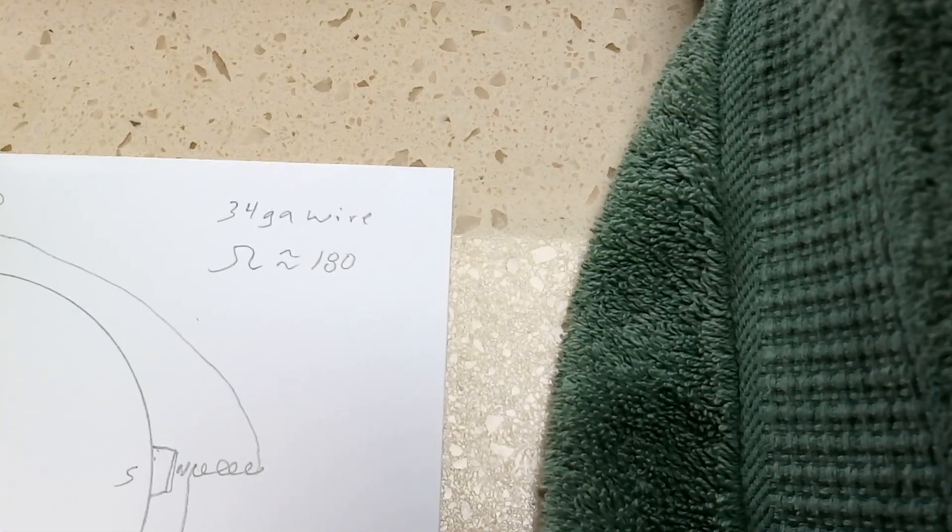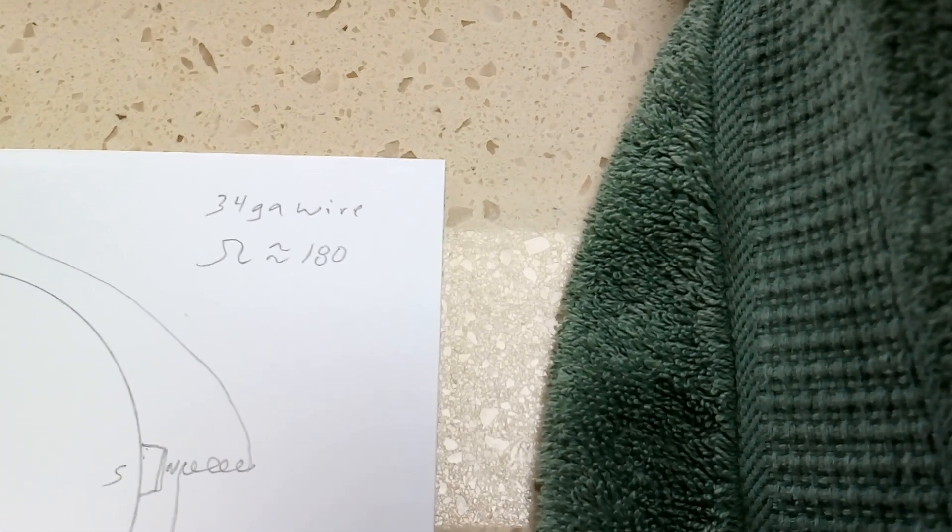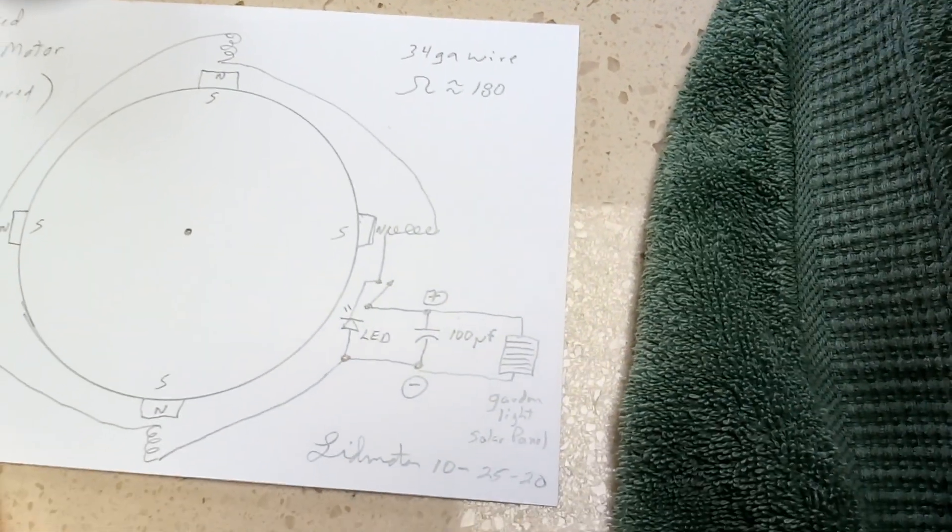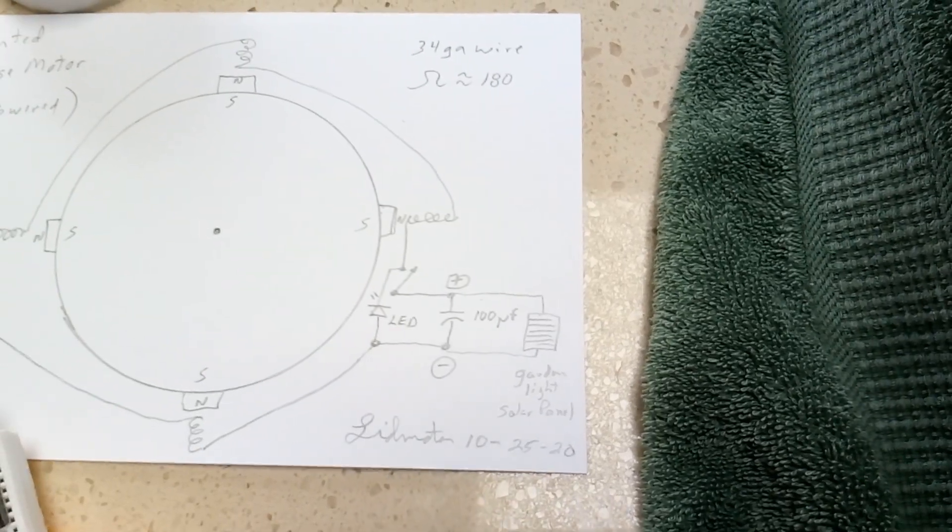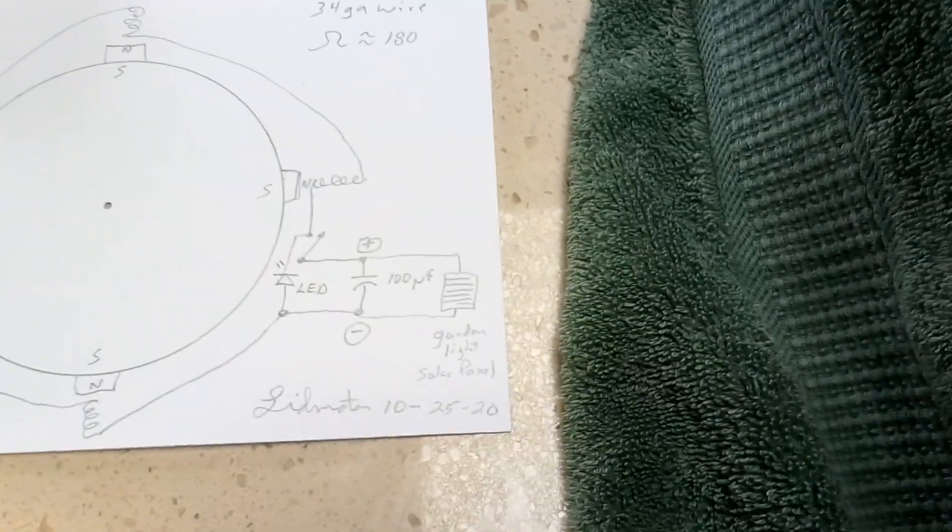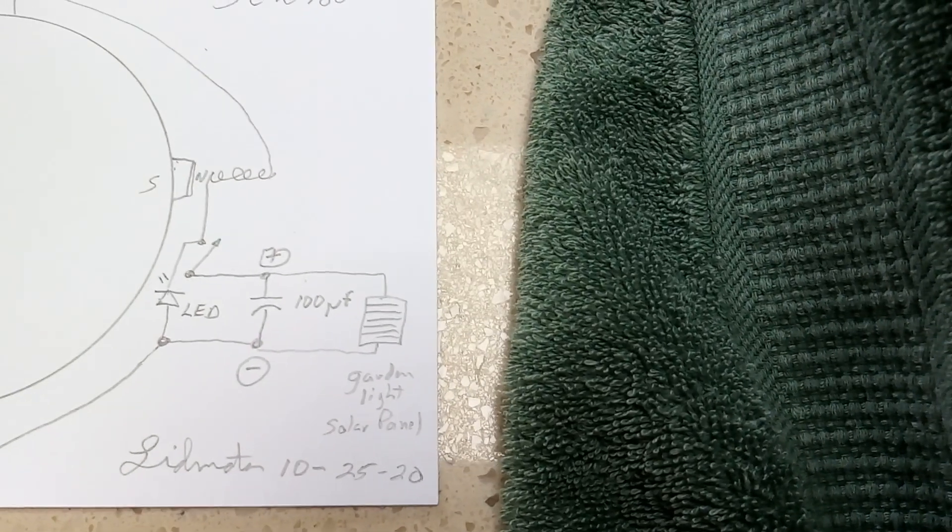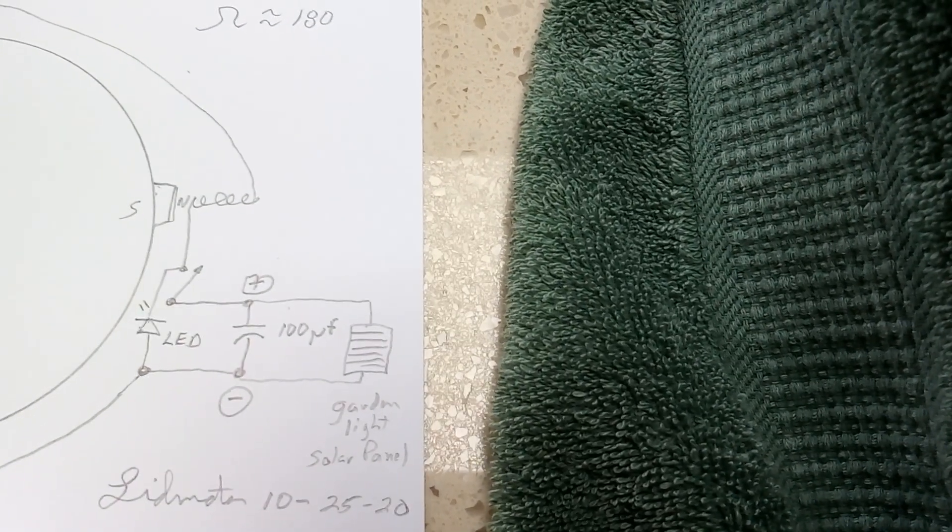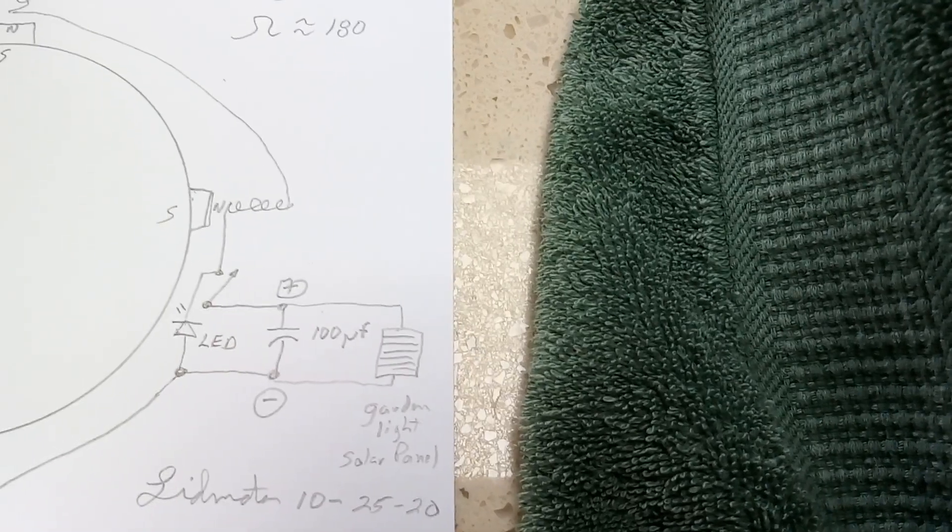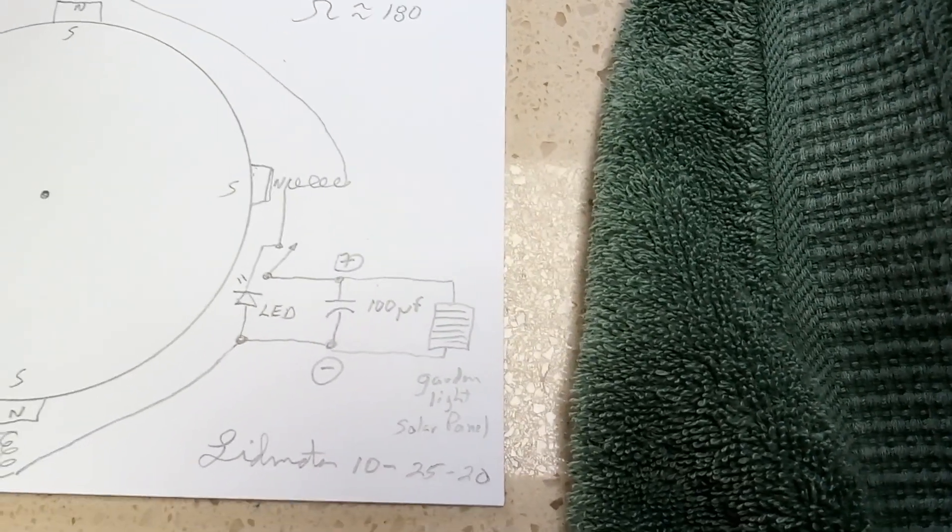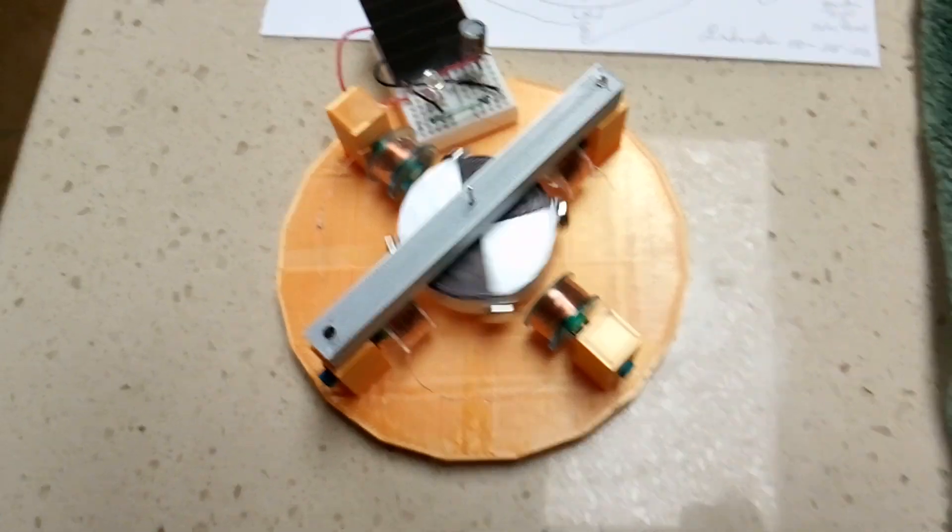The coils are nothing fancy - 34 gauge magnet wire. The whole coil array is about 180 ohms. I wanted something easy to wind and simple for my first motor. That's just a solar garden light solar panel, 100 microfarad capacitor to hold the juice between the pulses, simple reed switch, and bada bing bada boom, there you go.